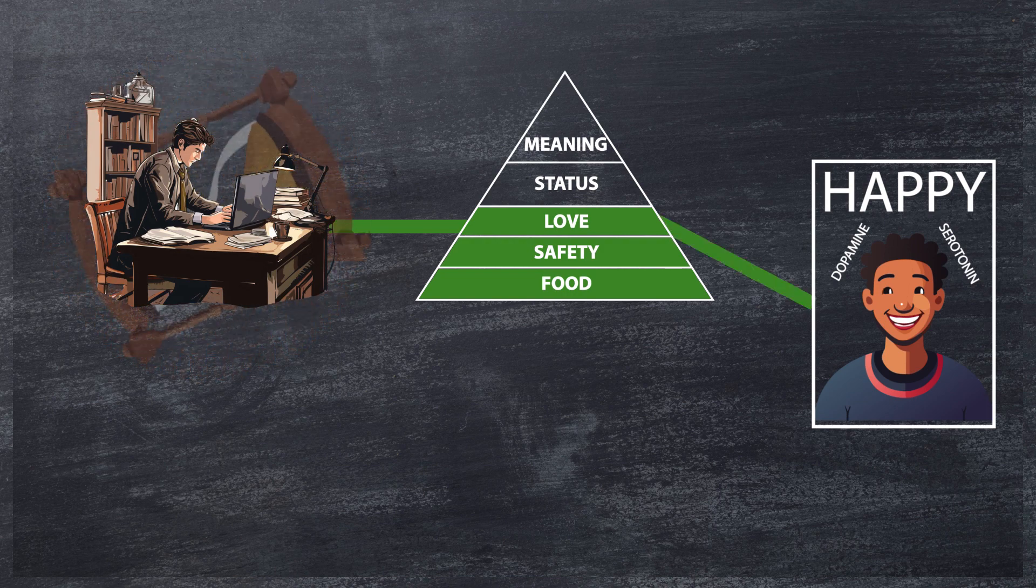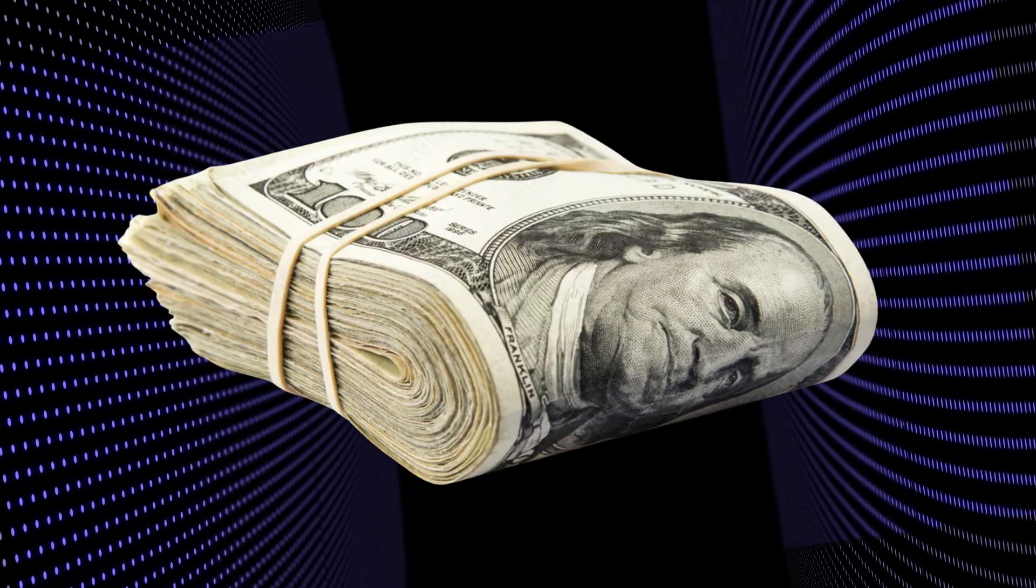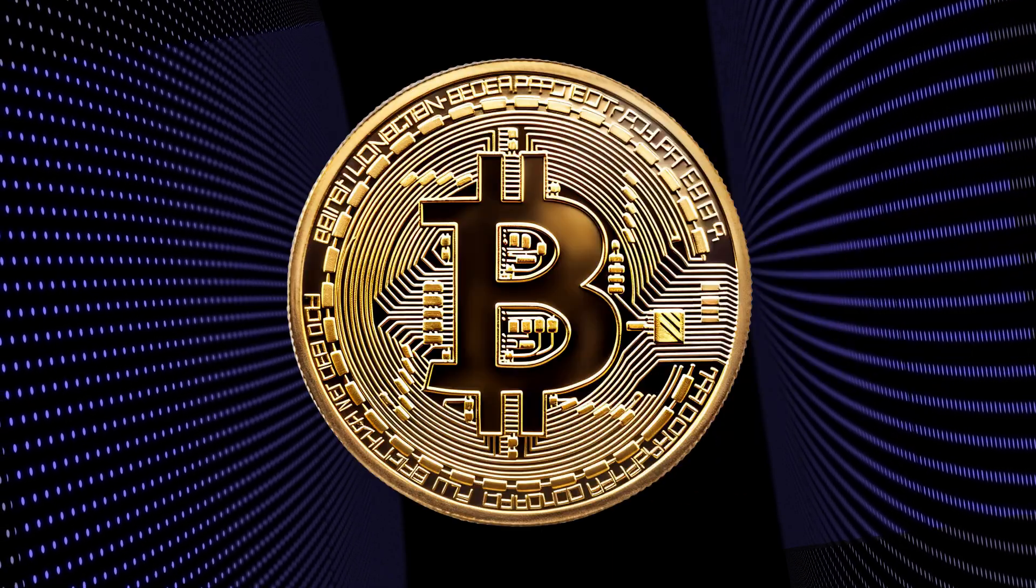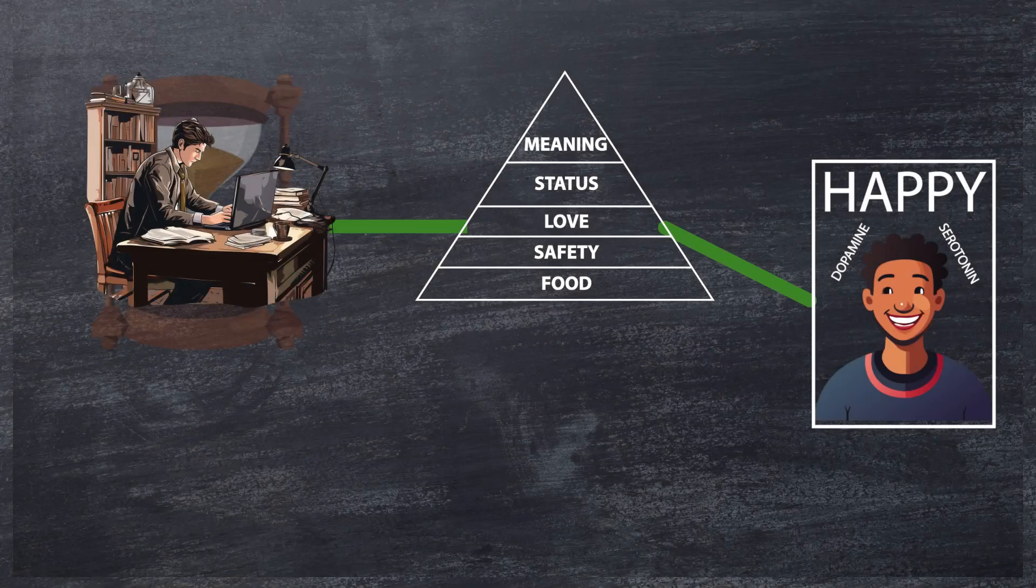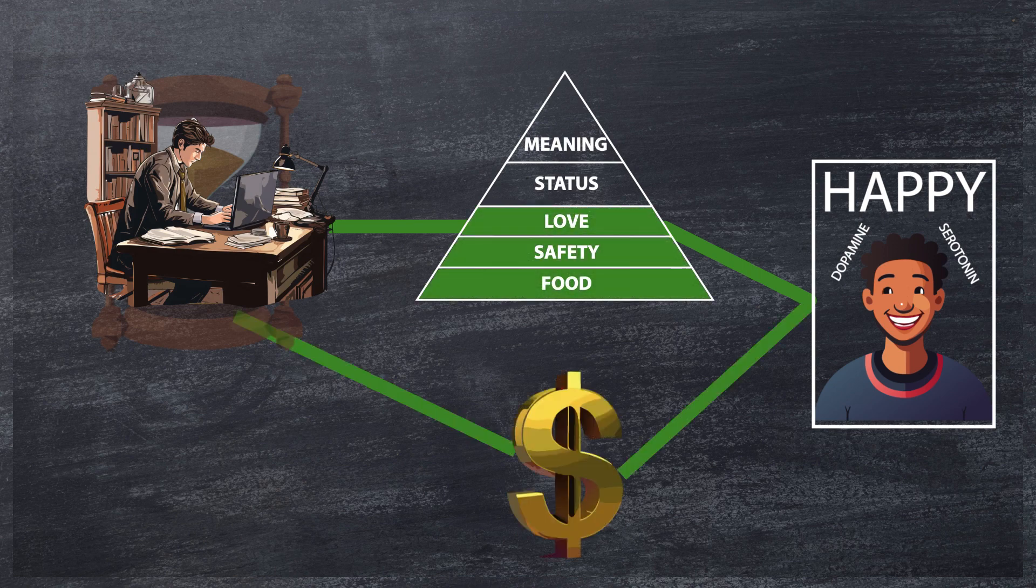However, while we climb, an interesting thing happens. As we work, we receive something called money. Initially, money was designed as a mean of exchange so we could convert our labor into goods to cover our needs. As a result, these two processes, climbing the pyramid and receiving the money, coincided. They are parallel. We work and we climb and we receive money. The money link gets bolder and bolder, stronger and stronger. And soon, our brain trains itself to receive pleasure not by fulfilling our needs but by receiving more money. And then, somehow, we stop climbing altogether.